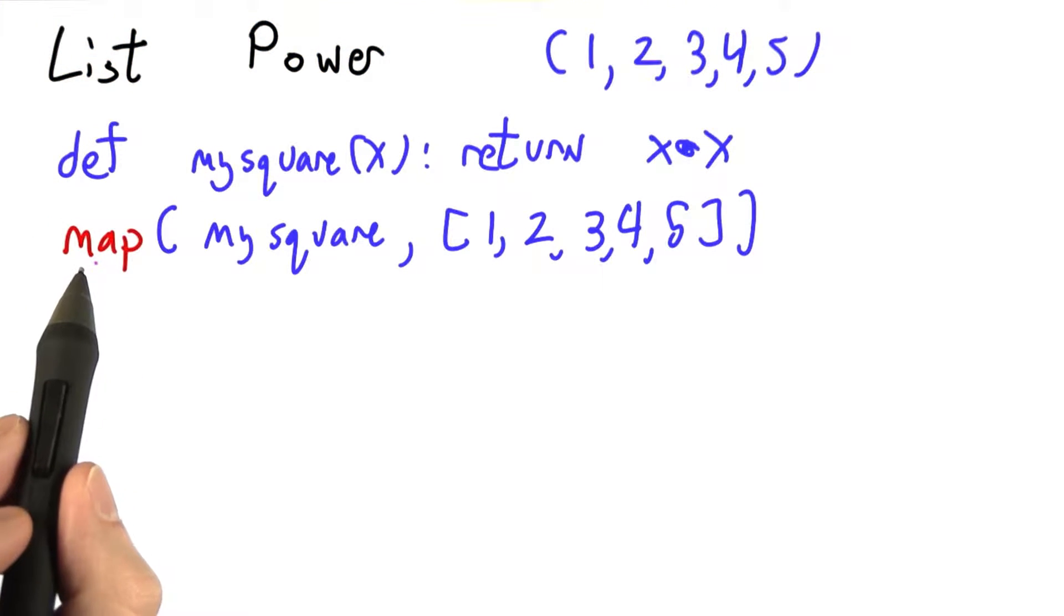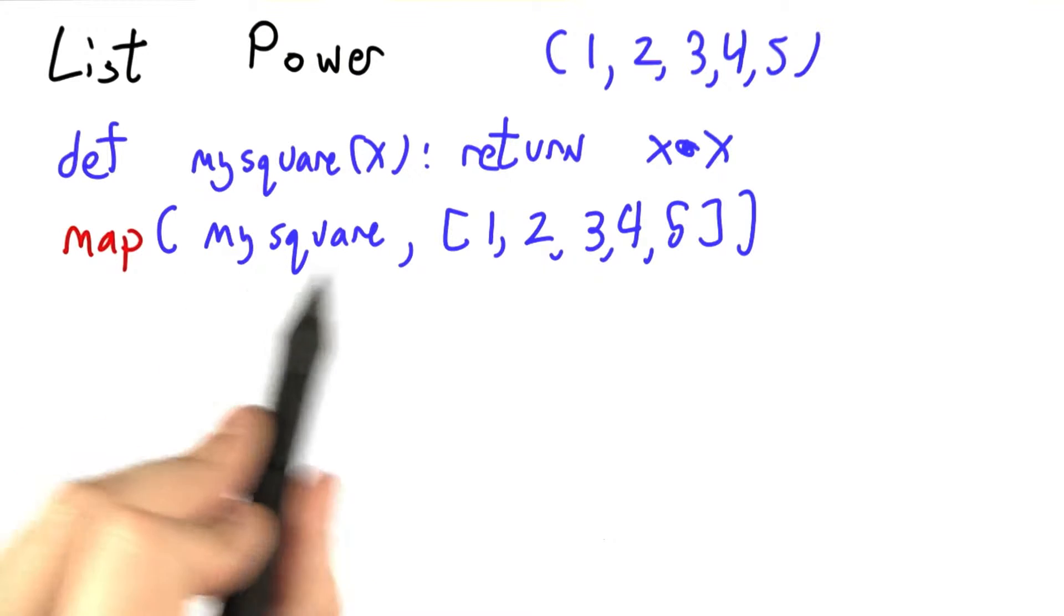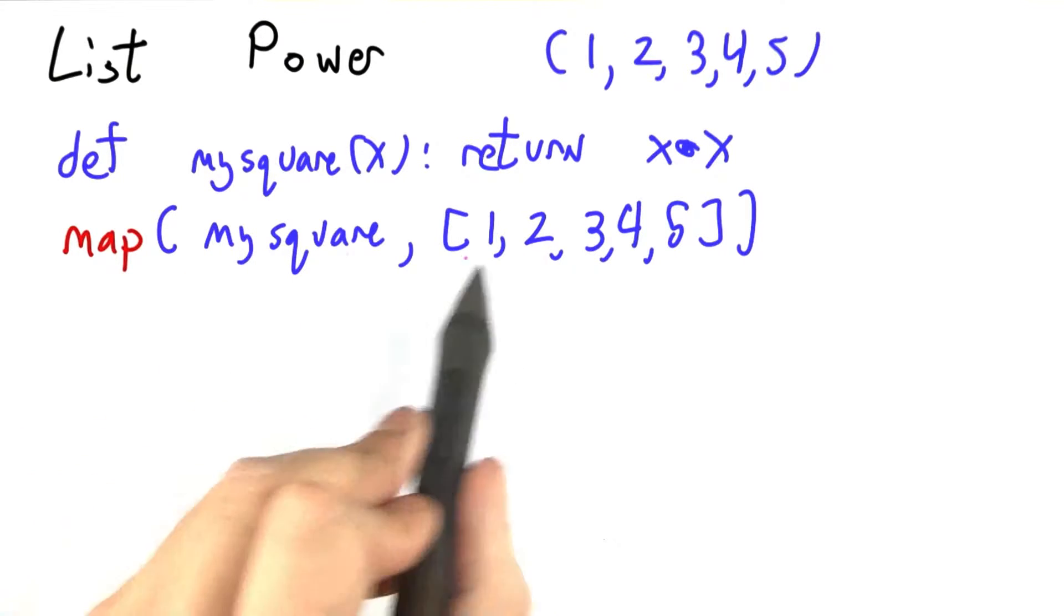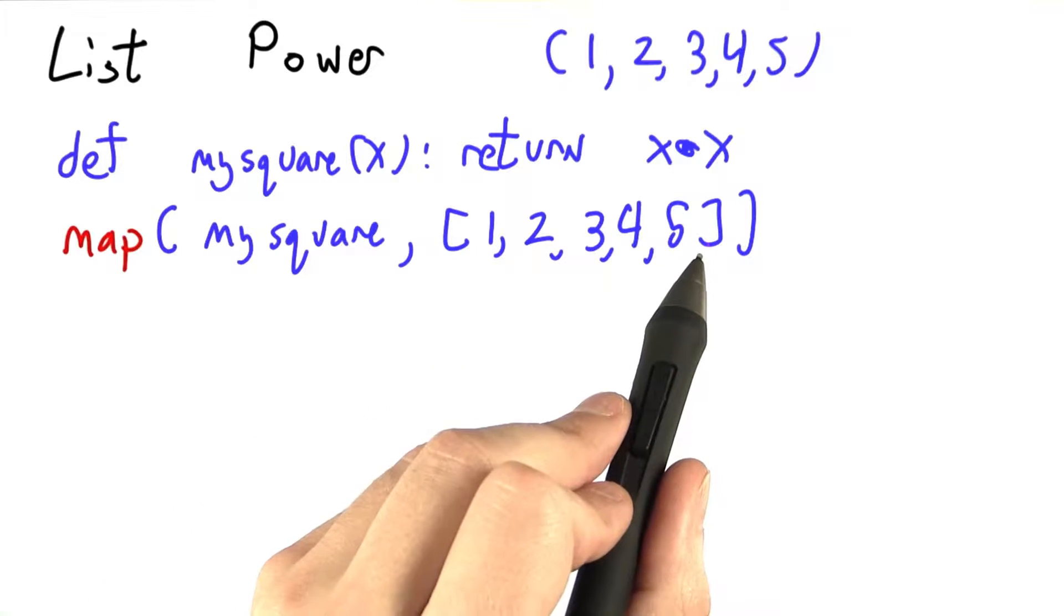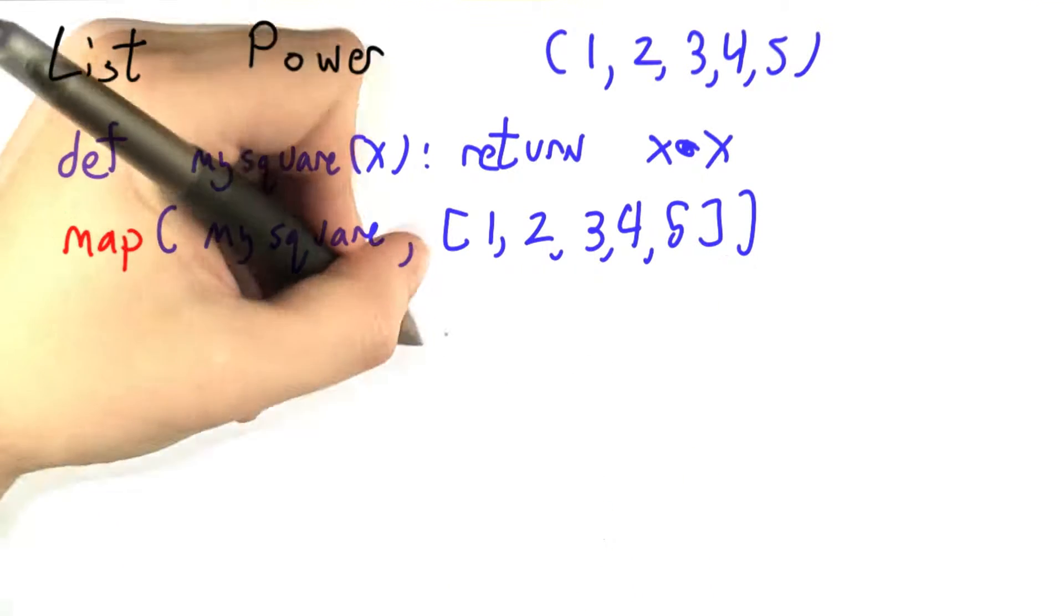That's not the only new power we're going to introduce. Suppose that you wanted to square all of the numbers in the list 1, 2, 3, 4, 5. Here's one way to do it. The function map takes a function as its first argument and then a list, and it applies that function to each element of the list in turn, creating a new list.